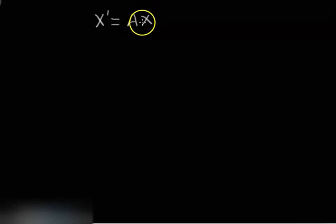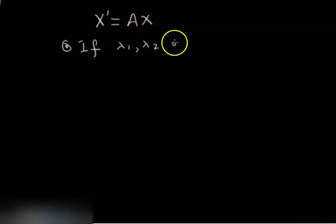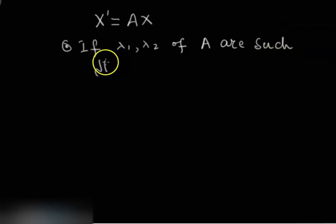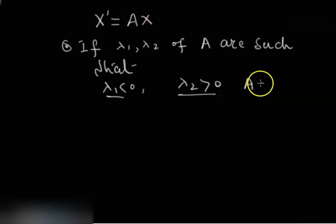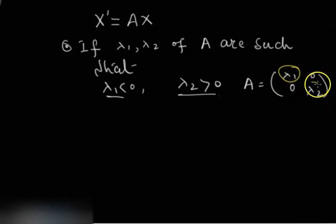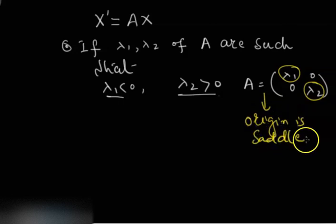Bismillahirrahmanirrahim. Let's recall what we did last time. For a given planar linear system, we discussed the case where eigenvalues λ1 and λ2 of A are such that λ1 is less than 0 and λ2 is greater than 0 — in other words, one eigenvalue is positive and the other is negative. We considered the matrix with λ1 and λ2 on the diagonal, and we saw that in this case the origin is a saddle and unstable equilibrium point.